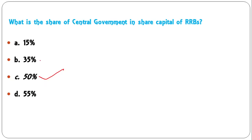To clarify the RRB shareholding: the central government holds 50%, the state government holds 15%, and the sponsored bank holds 35%. The correct answer for the central government share is 50%.